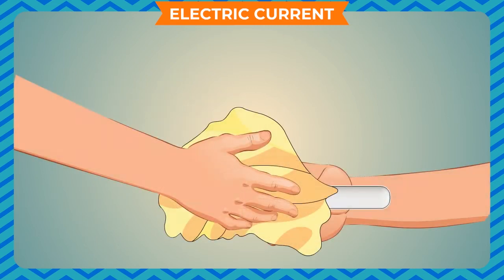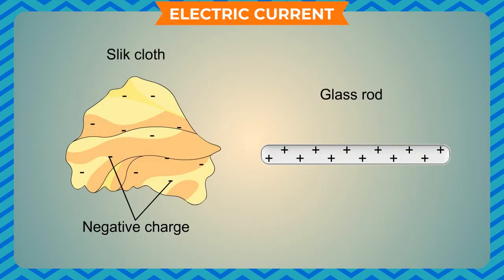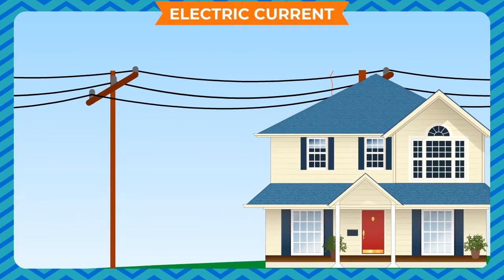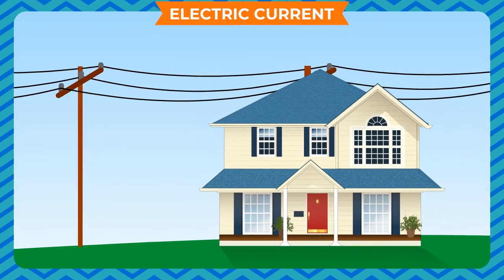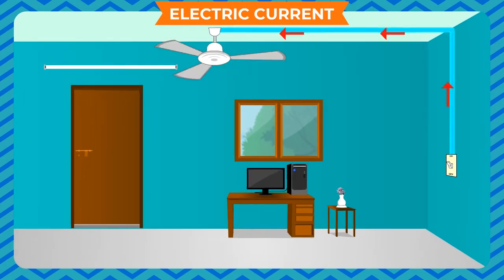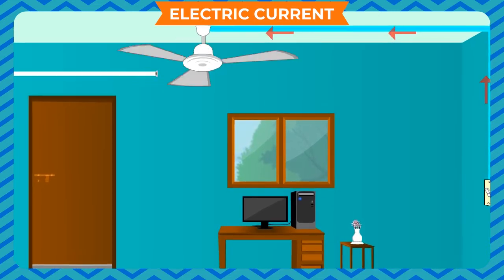However, when a glass rod is rubbed on a piece of silk, some electrons from the glass rod get transferred to the silk cloth. Thus, the glass rod becomes deficient in electrons and acquires a positive charge, while the silk cloth gains excess electrons and acquires an equal negative charge. Electric charge can be made to move in a continuous stream or current. The movement of electrons constitutes an electric current. For electricity to flow, we need freely moving electric charges.